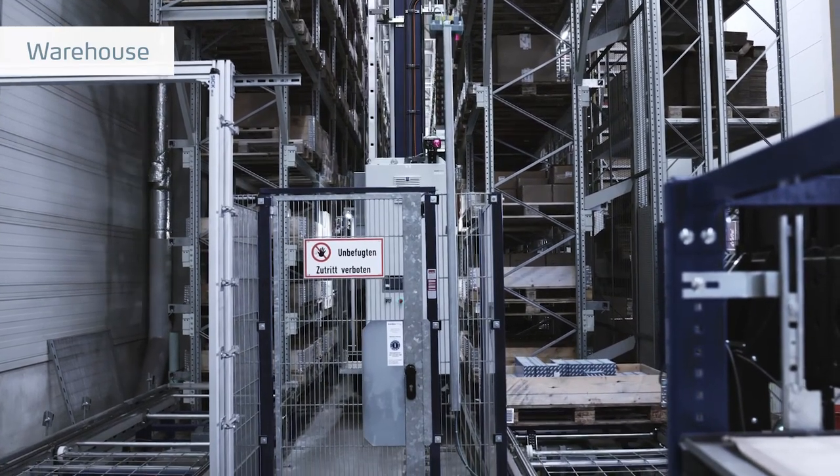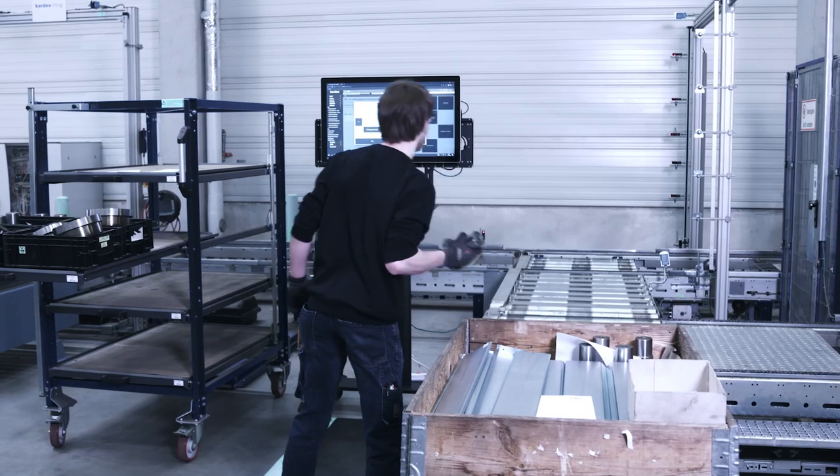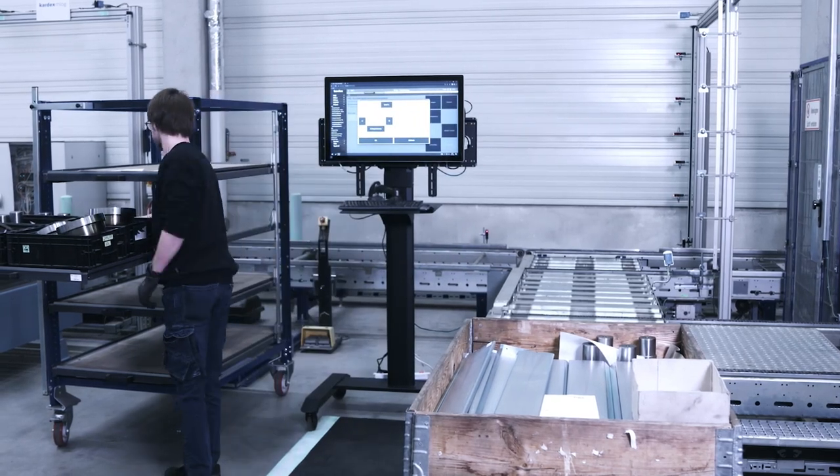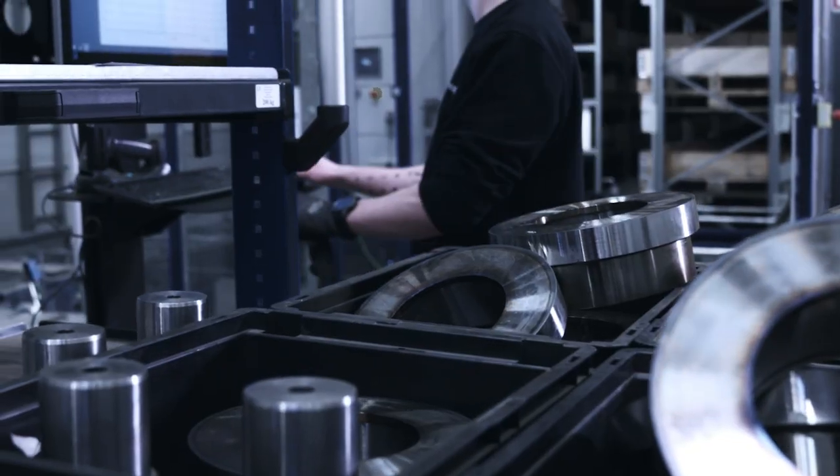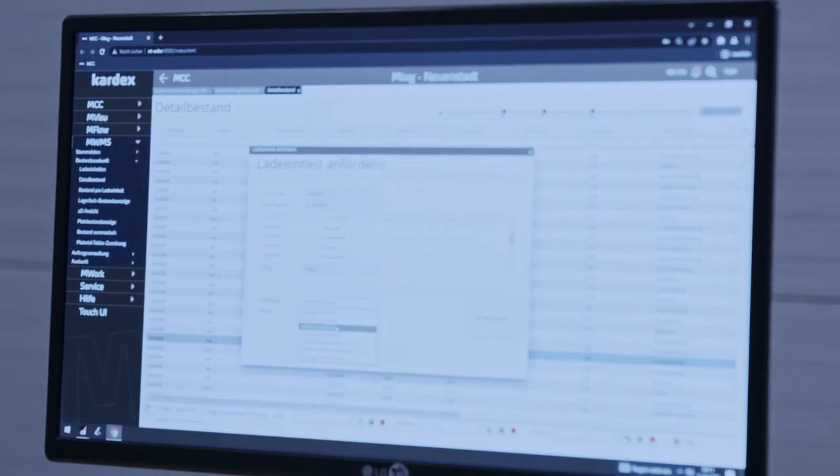Our goods warehouse stores all parts that are required for mechanical manufacturing. These include drives, wheels, roller bearings, and other spare parts. Storage and retrieval of parts is handled at the picking stations and is carried out via our conveying technology and Kardex's own Kardex Control Center software.